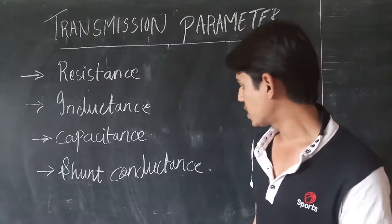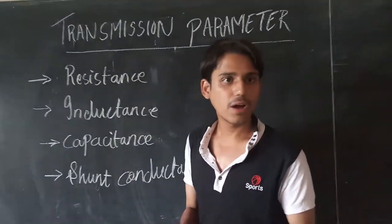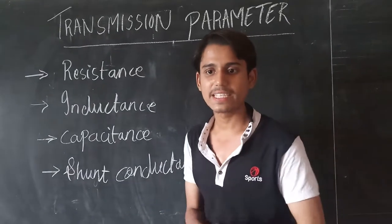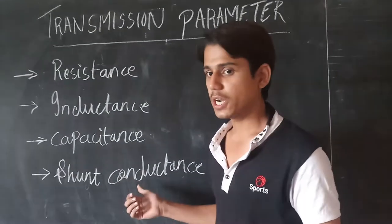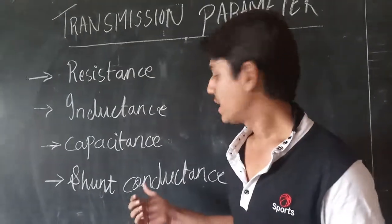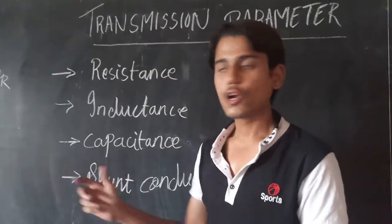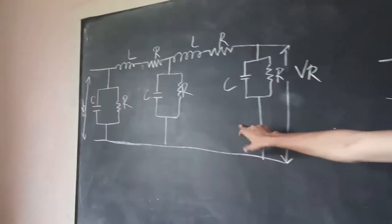Then there is shunt conductance. Air affects the dielectric medium between conductors. Some current flows through the dielectric because of dielectric imperfection. This is the diagram of the transmission line parameters.